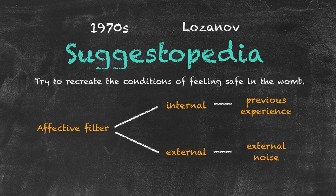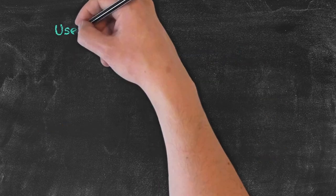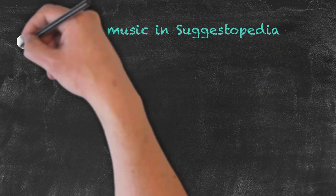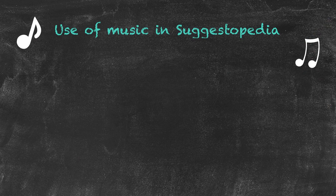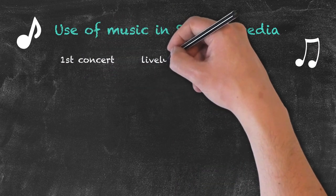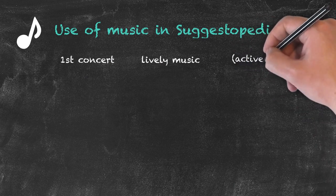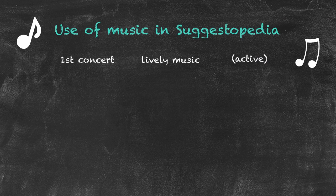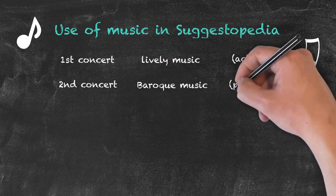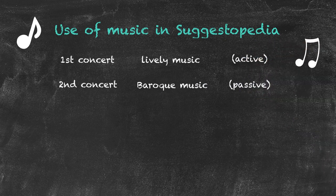So how do we teach in this situation? We first reduce the affective filter by making students feel comfortable. Then we use music in different forms depending on which part of the lesson we're in. In the first concert — the active part — we use lively music to get brainwaves moving and put students into a receptive mood. Then in the second concert, the teacher introduces the target language, usually in the form of dictation, whilst Baroque music plays, putting students into a passive state so they absorb the information like a sponge.